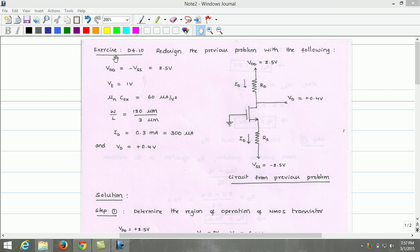The second design example under MOSFET circuits at DC is exercise D4.10. In this problem, we are going to redesign the previous problem for the following data: VDD equals minus VSS equals 2.5V, threshold voltage